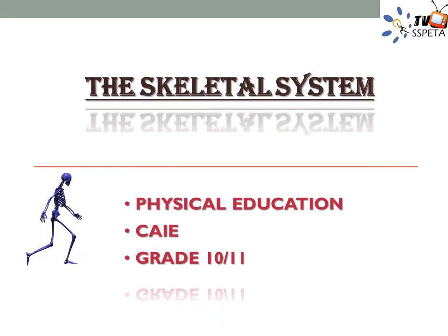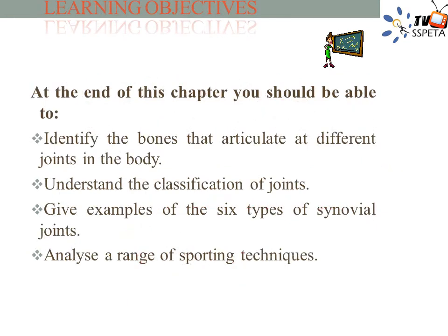The Skeletal System: The Skeleton, Bones and Joints. The learning objectives — at the end of this chapter you should be able to: 1. Identify the bones that articulate at different joints in the body. 2. Understand the classification of joints. 3. Give examples of the 6 types of synovial joints. 4. Analyze a range of sporting techniques.